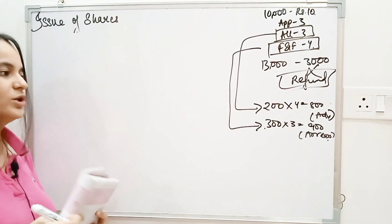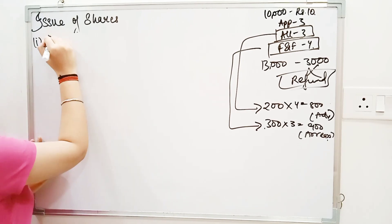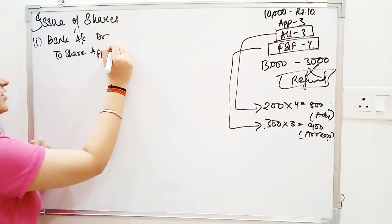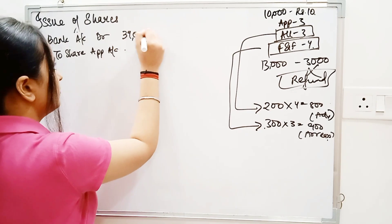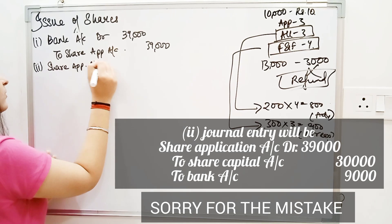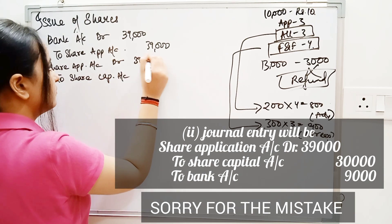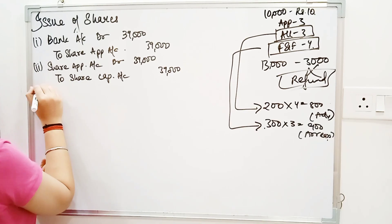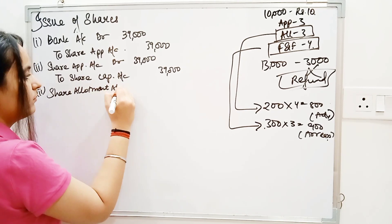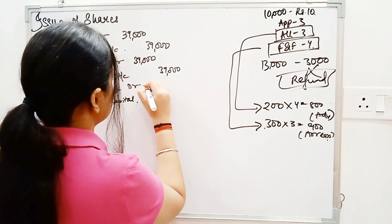So this is the question and here we will see which journal entries to pass. First journal entry: bank account debit to share application — 13,000 applicants, application money is 3 rupees, so 39,000. Second entry: same money transferred — share application account debit to share capital, same 39,000. Third entry: share allotment — share allotment account debit to share capital. Allotment time we need to call up 3 rupees, so 10,000 shares × 3 = 30,000.